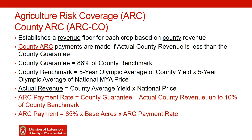If there's a gap — a revenue loss — there's a maximum limit of 10% of the county benchmark. Once you have that payment rate, assuming the actual revenue for the county is below that guarantee, it will trigger these payments. It follows the same general formula: 85% times the base acres, times the ARC payment rate, which is the gap between the guarantee and the actual county revenue.